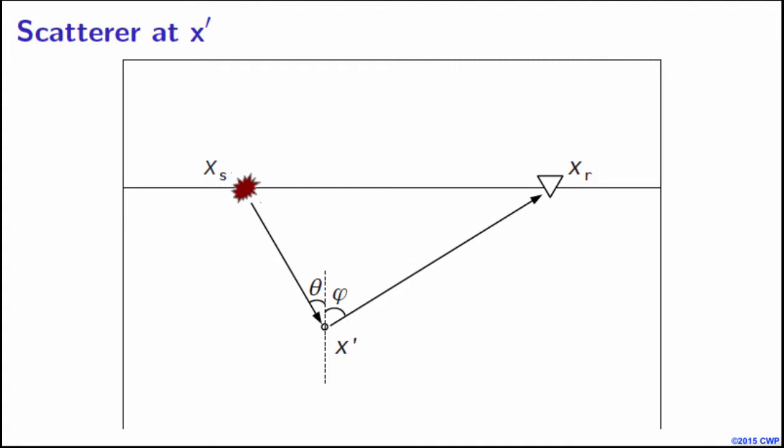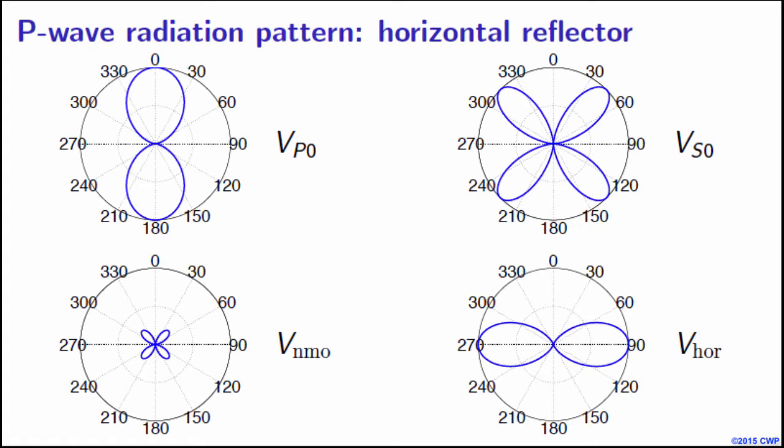So what are radiation patterns? Suppose we have an anomaly in one of the model parameters at a point X dash in the subsurface. So when energy from Xs is incident on the scatterer, the anomaly, then the energy that is scattered by the anomaly is dependent on the angle of scatter. So when we plot that, these patterns, we get some more idea about which model parameter can be updated. So I am going to show you the radiation patterns for the P wave field, for an anomaly situated on a horizontal reflector.